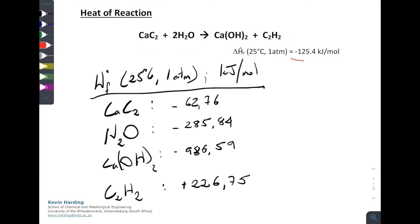Now while this number 125.4 kilojoules per mole was read off a table from a textbook, if I did not have that information, I could have gone to a table as well and looked up the heats of formation at 25 degrees Celsius and 1 atmosphere. For this, I find that the calcium carbide value is minus 62.76 kilojoules per mole. The water is minus 285.84. Calcium hydroxide is minus 986.59. And the acetylene, the gaseous acetylene is positive 226.75.